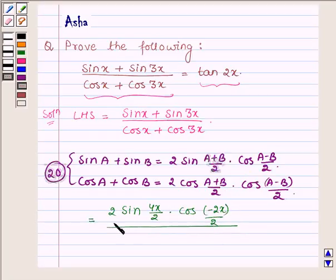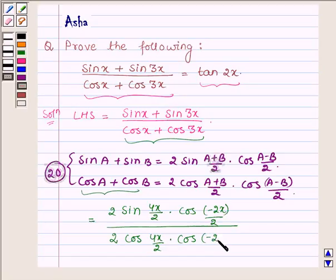And in the denominator we have cos x plus cos 3x which is in the form of cos a plus cos b where a is x and b is 3x. So in applying the identity it can be written as 2 cos, first we have a plus b, so x plus 3x is 4x upon 2. And here cos a minus b, that is x minus 3x which is minus 2x upon 2.